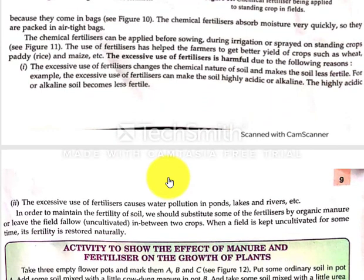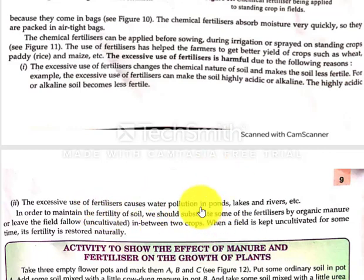What are some harmful effects? If we use any kind of fertilizer in excess, we will cause problems. The excessive use of fertilizers changes the chemical nature of our soil, making it less fertile. Second, if we use fertilizers in excess, it causes water pollution, because the excess nutrients leach into water areas.